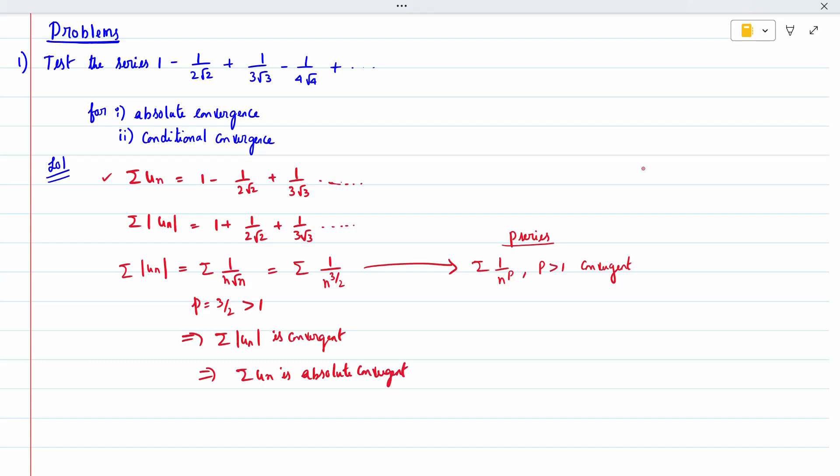For the second case, we cannot prove conditional convergence here. The reason is that conditional convergence requires the sum of |uₙ| to be divergent while the sum of uₙ converges. Since our sum of |uₙ| is convergent, it is not conditionally convergent. Thank you.